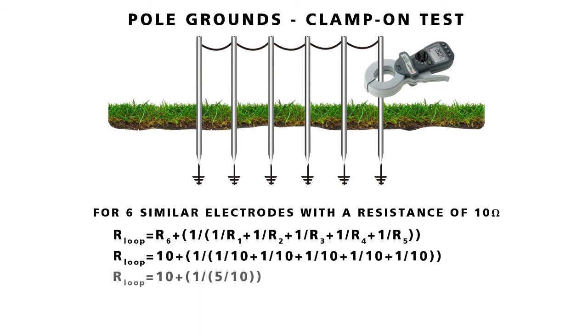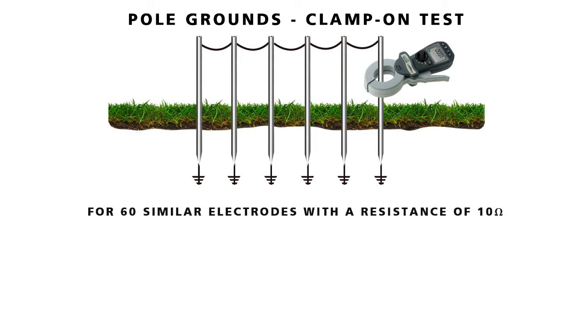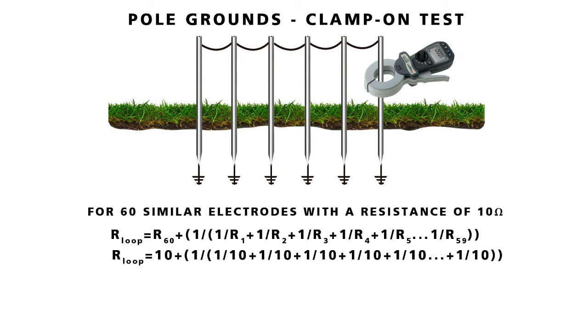In a 6-rod system, calculation shows the parallel resistance contributes 2 ohms and therefore a 10 ohm rod would read as 12. But for a 60-rod system, calculations show that the error is reduced to a mere .17 ohms.